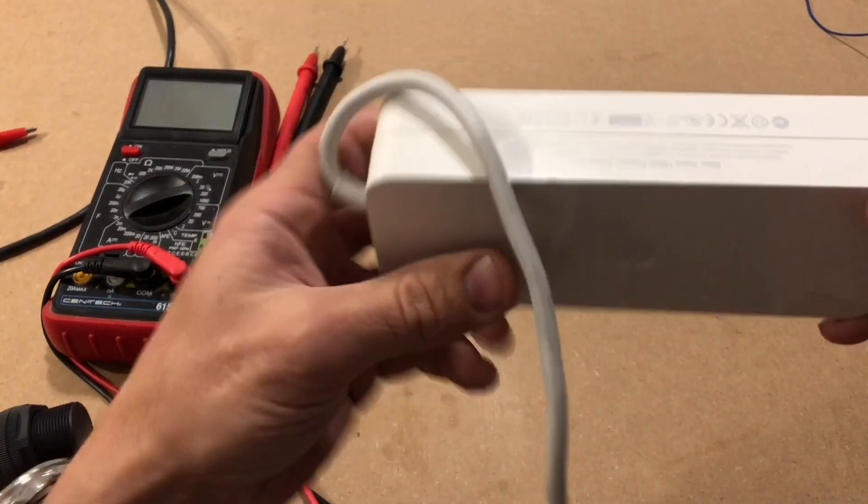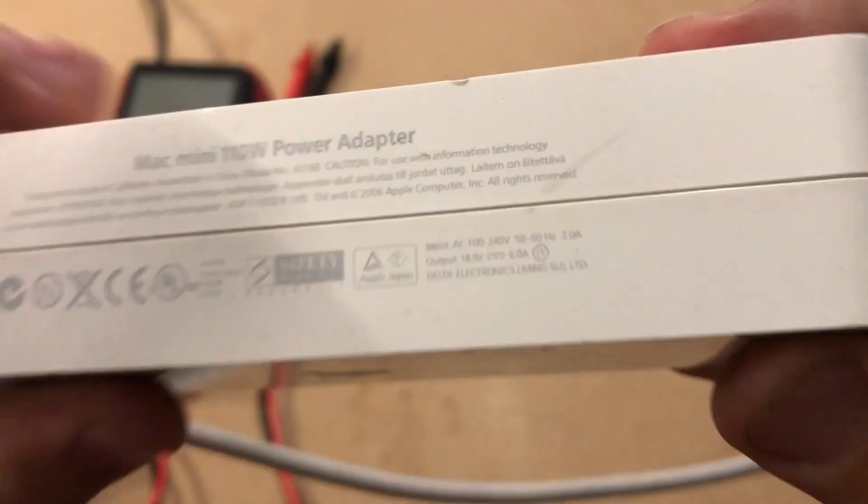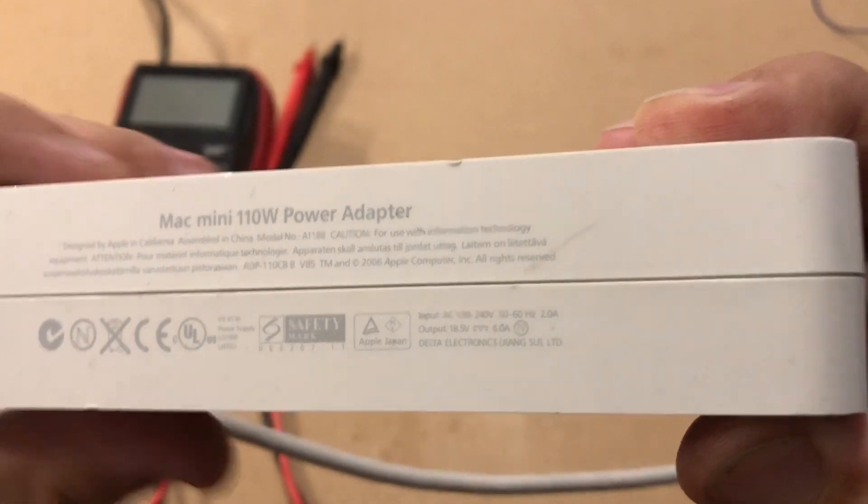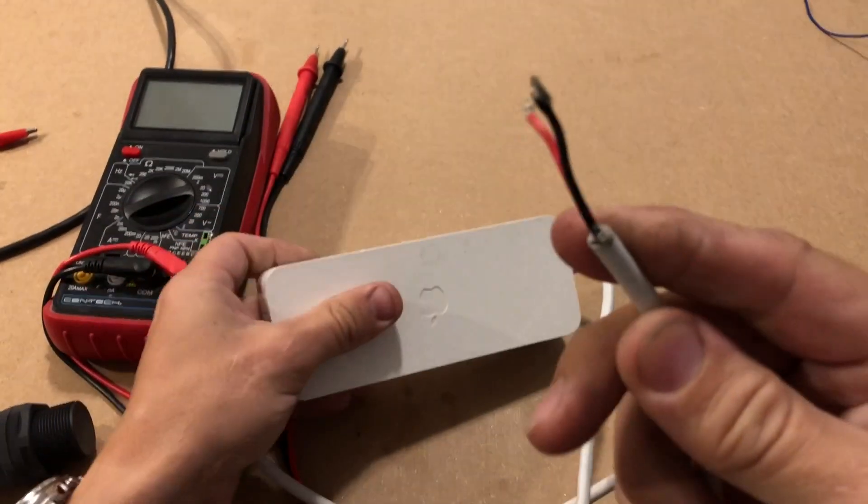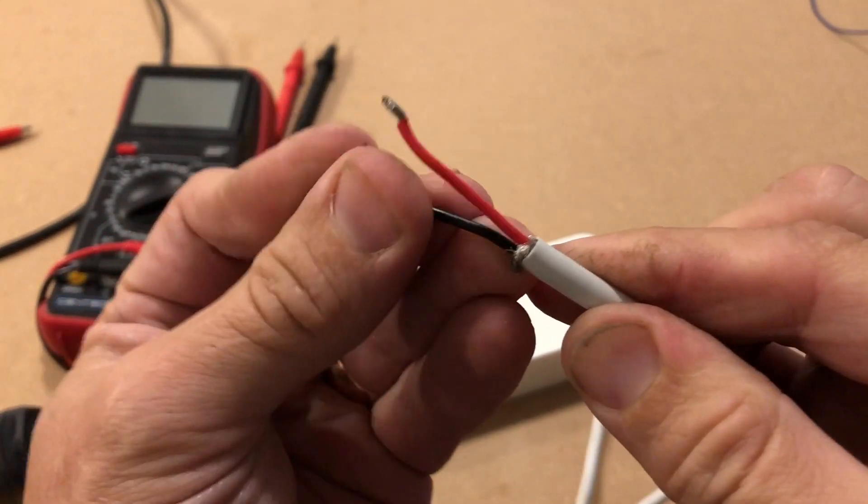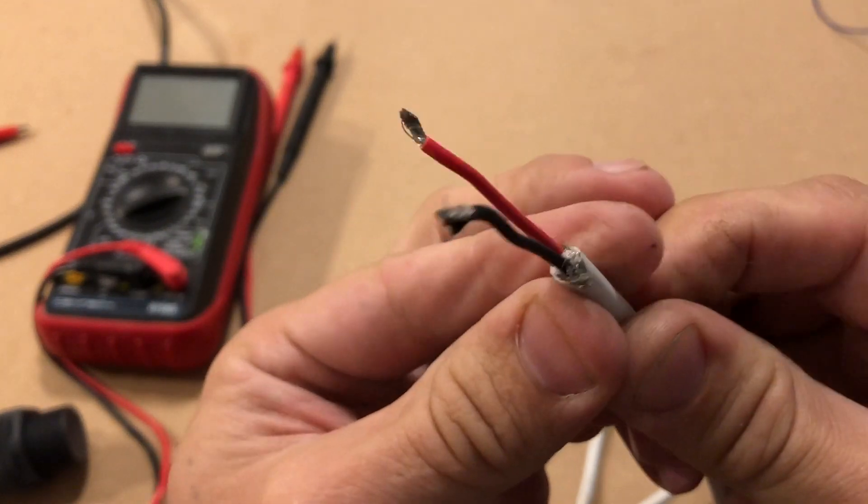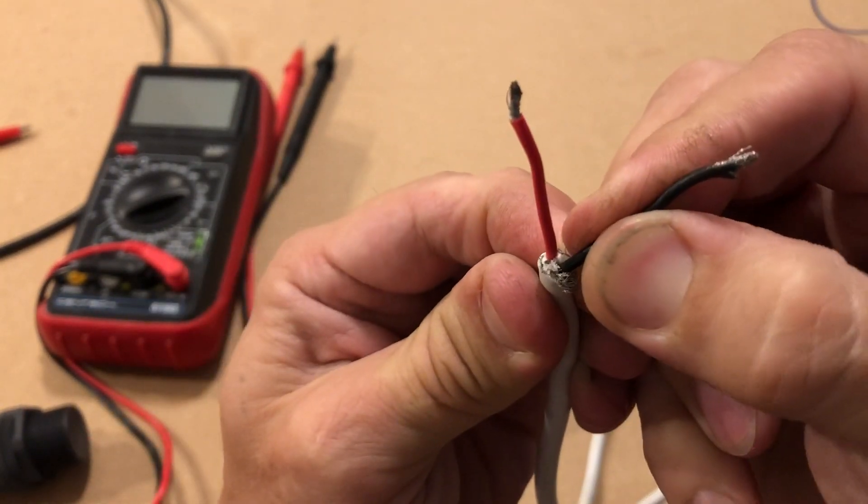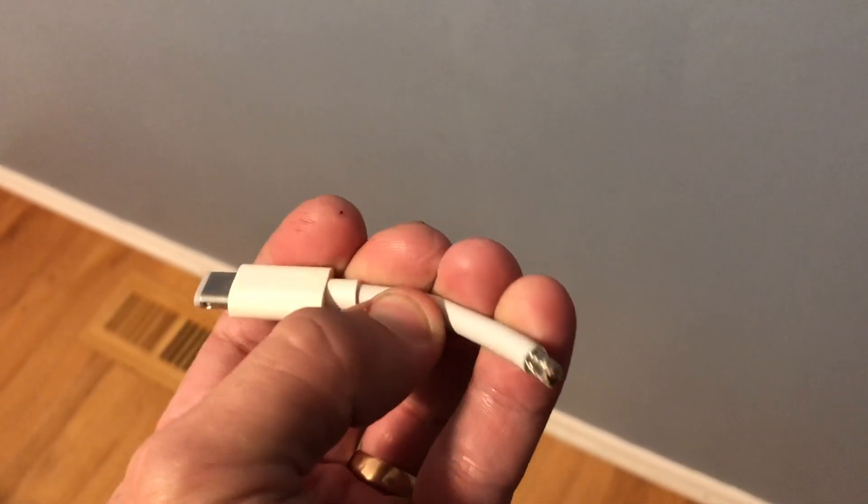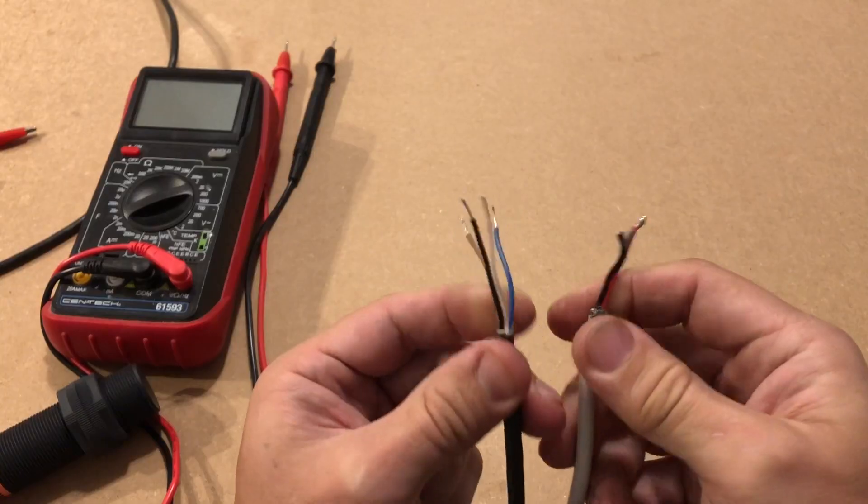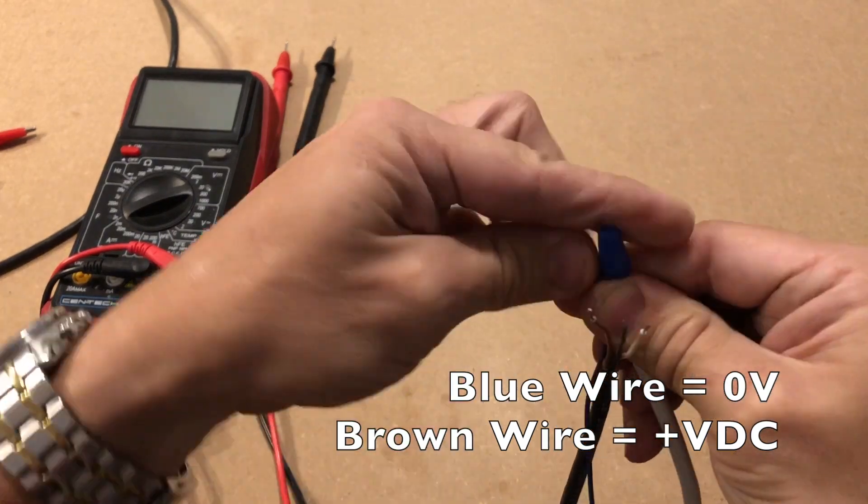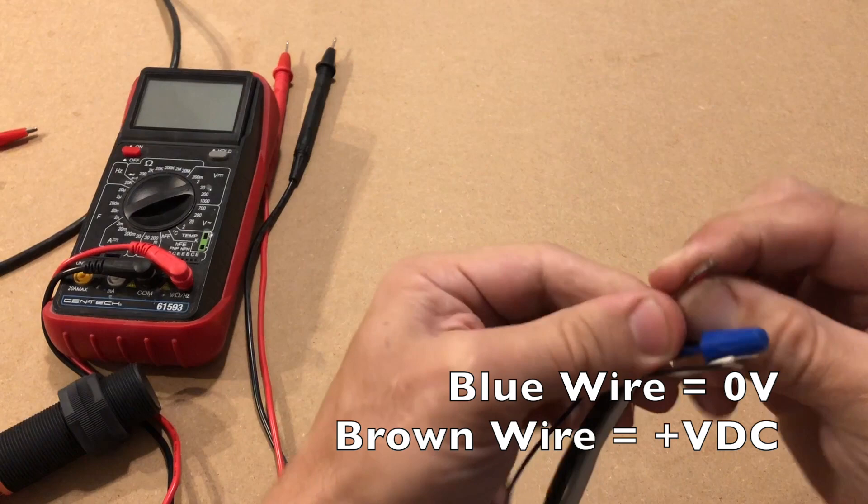I am going to power it up using a grossly oversized power supply from a really old Apple device which is no more. The blue tap wire connected to 0 volt is going to be our common signal wire to reference our measurements to.